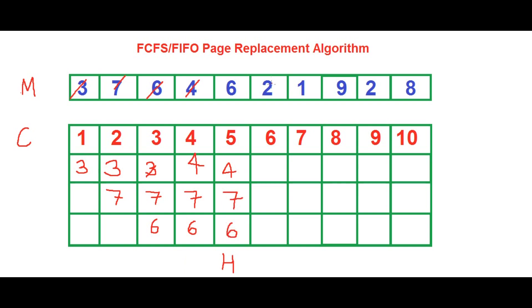The next one which wants to come in is 2, and there's no space left, so we delete the oldest element of the memory buffer. We cancel 7, write 2, keeping 4 and 6 — so the cache is now 4, 2, and 6.